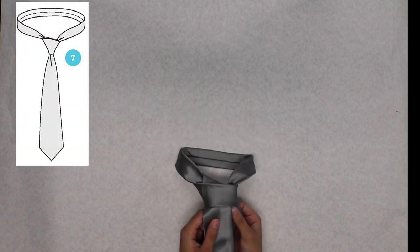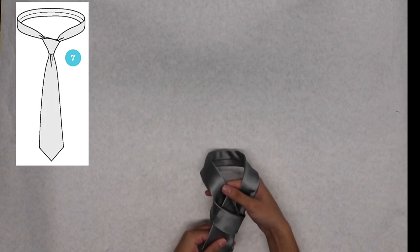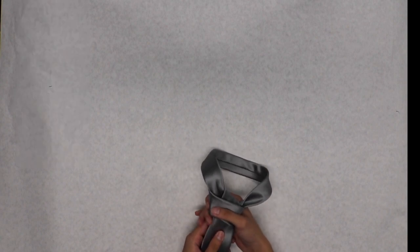After you put it through the hole, use the small tie to pull it up and that's how you make a four in hand tie.